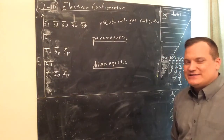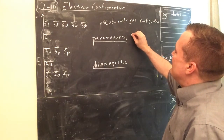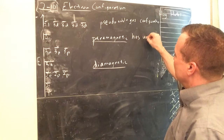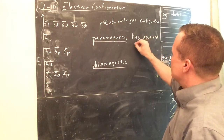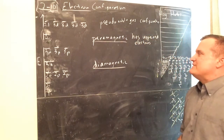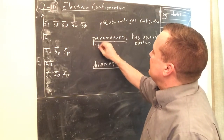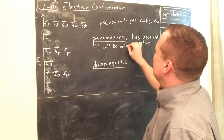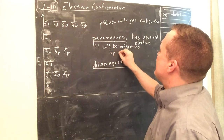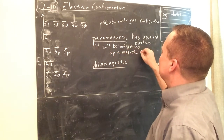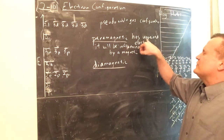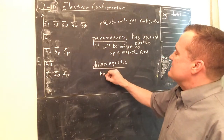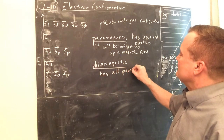Here are the definitions. Paramagnetic: the species or atom has unpaired electrons — it will be influenced by a magnetic field. Diamagnetic: the species has all paired electrons — it will not be influenced by a magnetic field. The easy way to remember: 'di' means two. If every orbital has two electrons paired up-down, that element is diamagnetic and not magnetic.